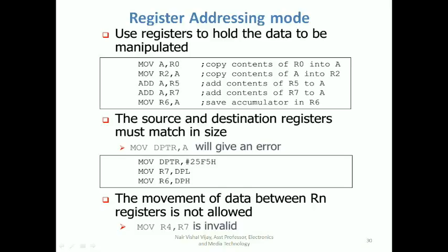The next addressing mode is the register addressing mode. Register addressing mode is an addressing mode where you transfer data from one register to another register. For example, the accumulator is a register, and R0, R1, R2, R3, R4 are registers in the register bank. You can transfer data between two registers like accumulator and R0, or R5 and accumulator, or DPH to R7. However, you cannot transfer data between two registers within the same register bank, like R4 and R7 — that is an invalid transaction.